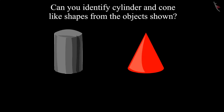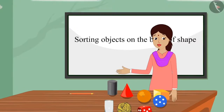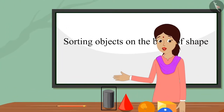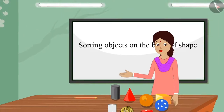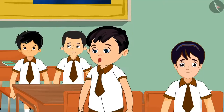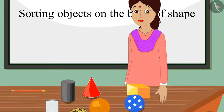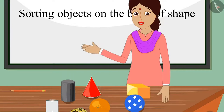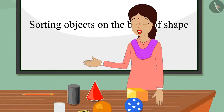The teacher asks children to identify the shape of the objects. A student says: 'Teacher, its shape is like that of a cylinder.' The teacher confirms: 'Well done, Pinky, it is like a cylinder.' Another student says: 'Teacher, its shape is like a cone.' The teacher responds: 'Well done, Choto! It has a cone-like shape.'